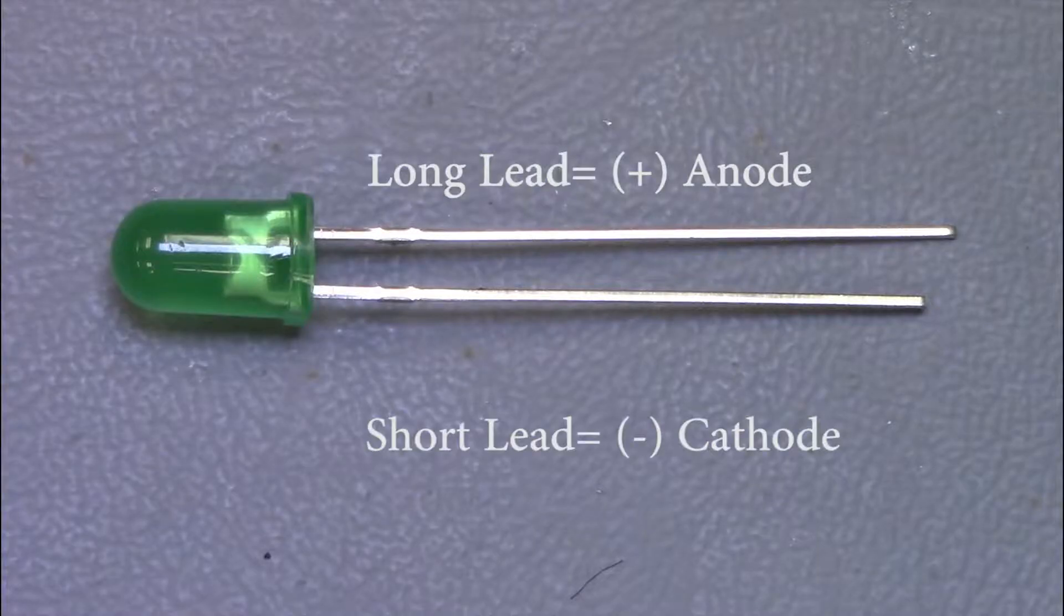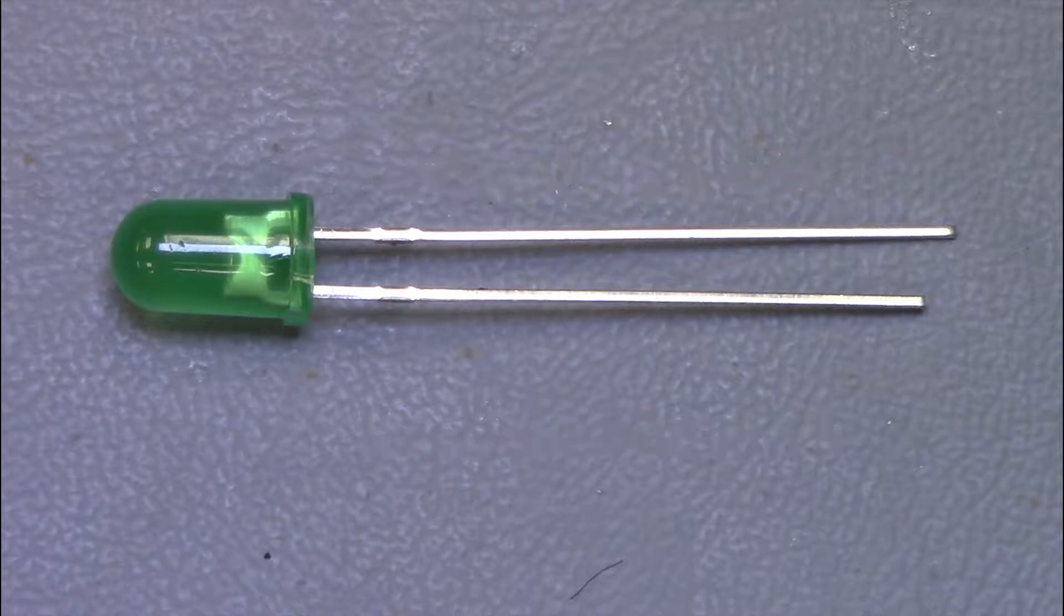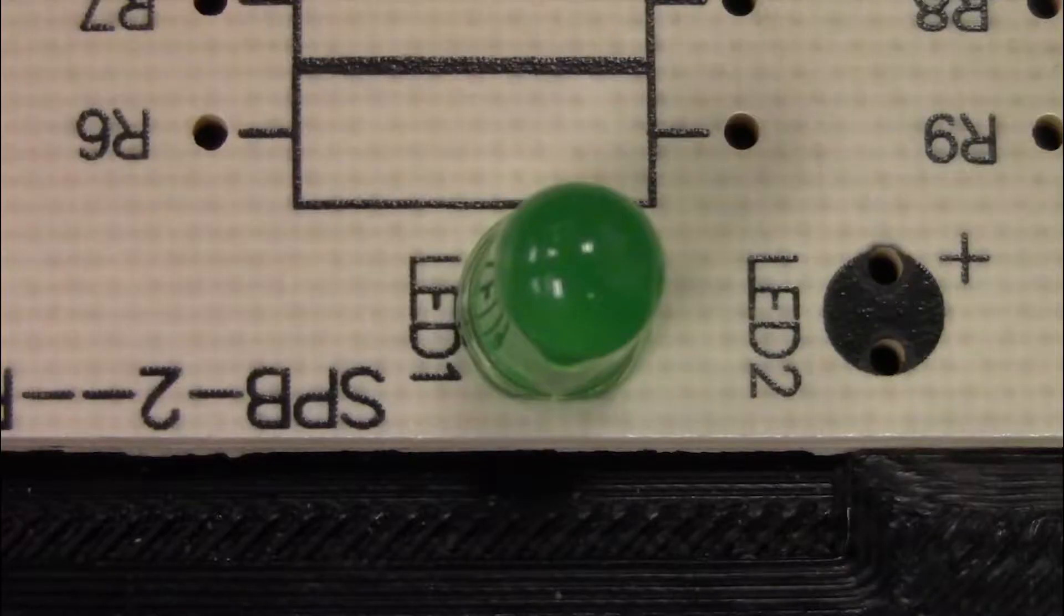The LEDs are similar to the capacitor. Short lead is negative and the long lead is positive. If the leads are trimmed already, there's still a way to tell. The cathode side will have a straight edge on the rim of the plastic case.